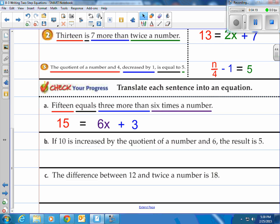How about b? If 10 is increased by the quotient of a number and 6, the result is 5. Ten being increased by the quotient, which is the answer to a division problem. The quotient of a number and 6 means they're being divided. The result, or the equal sign, is 5. So we have 10 plus n divided by 6 equals 5. That one translates pretty much word for word.